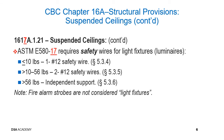ASTM E580 requires safety wires for light fixtures as follows: if less than or equal to 10 pounds, one number 12 safety wire is required; if greater than 10 pounds and up to 56 pounds, two number 12 safety wires are required.